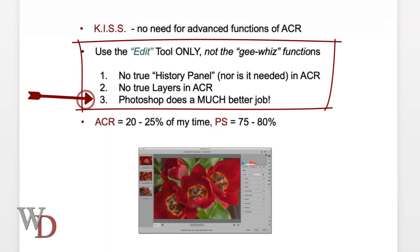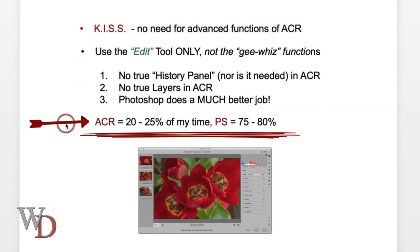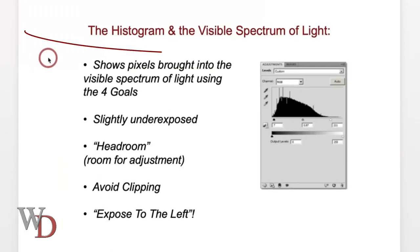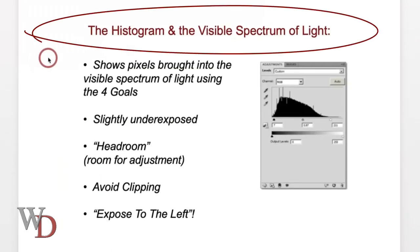How much time do you spend in each program? You should strike a balance between time spent in ACR and Photoshop, using the strengths of each. Typically, I'll spend 20 to 25 percent of my file time in Adobe Camera Raw, with the balance in Photoshop.